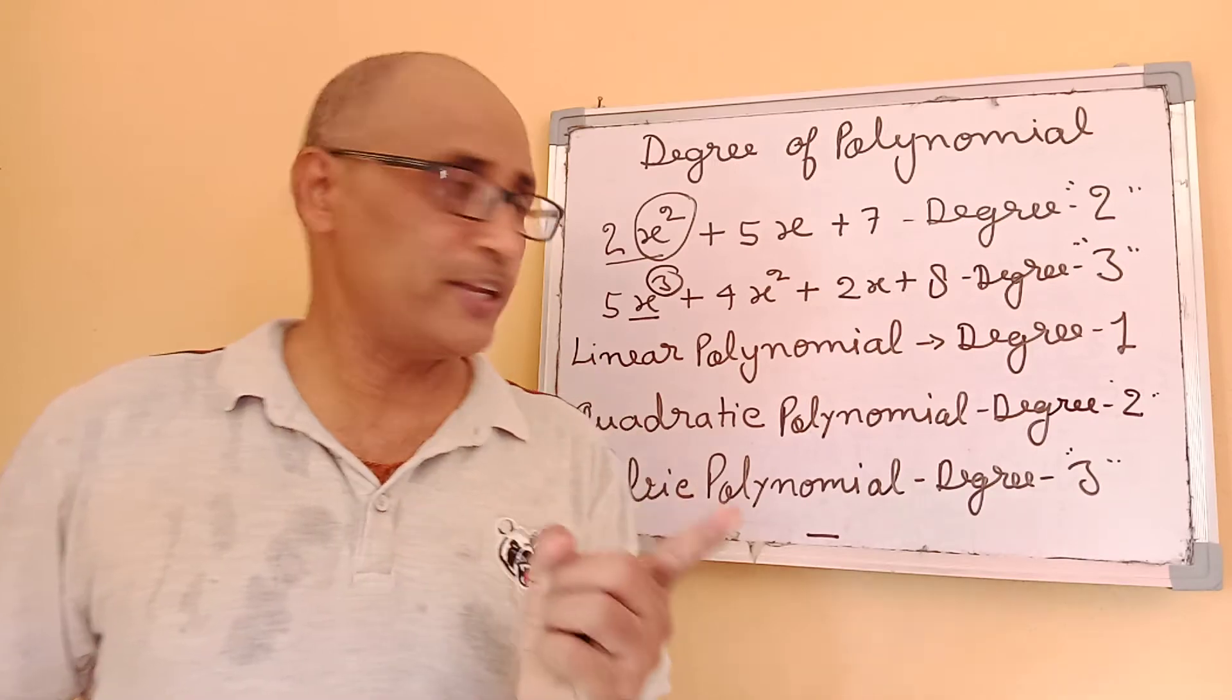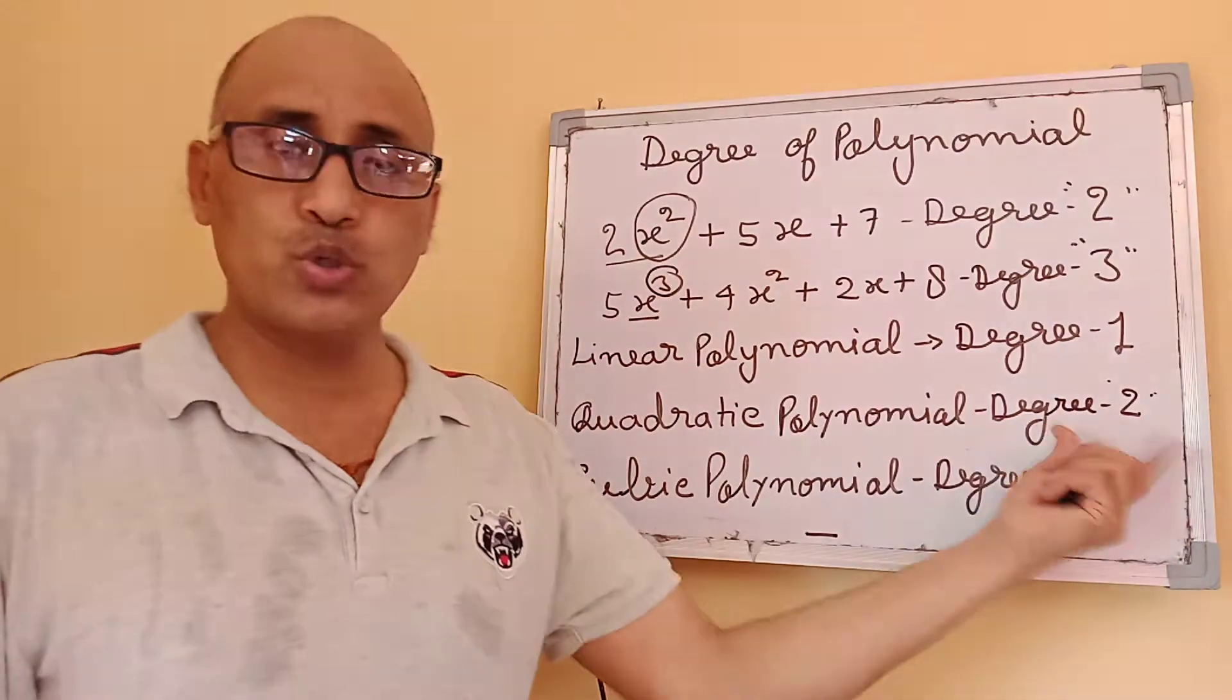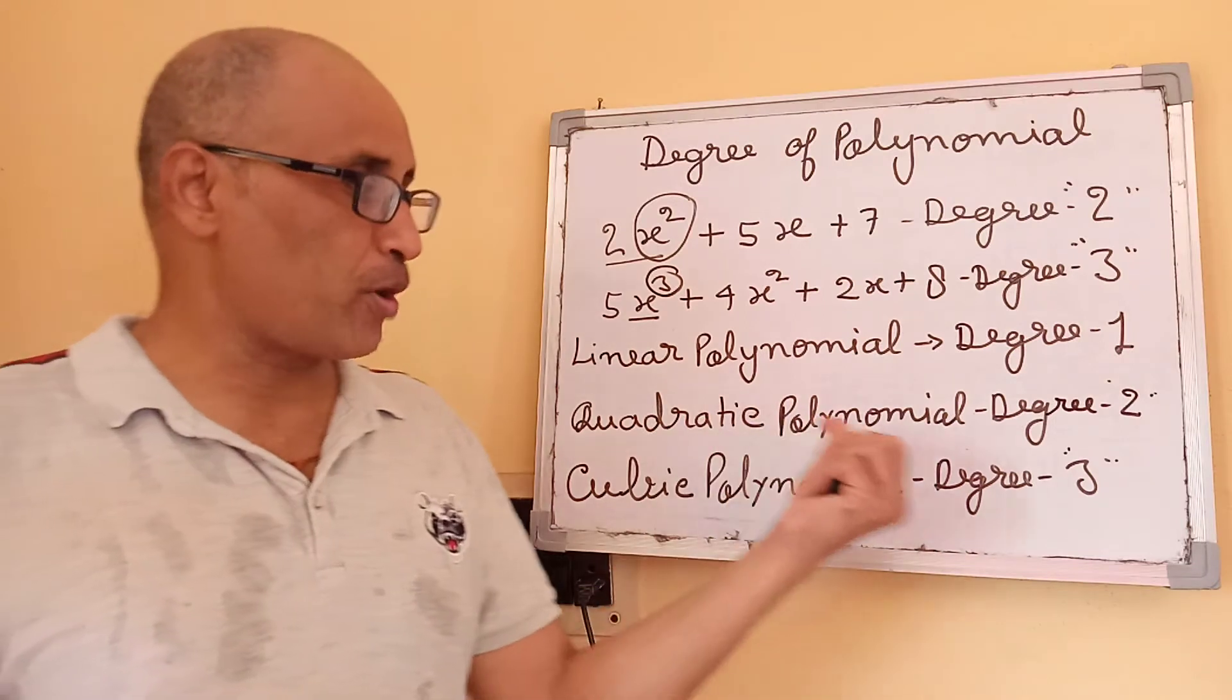If a polynomial has degree 2, that is called a quadratic polynomial.